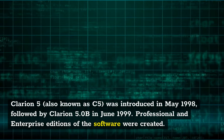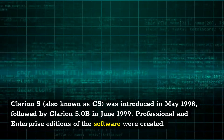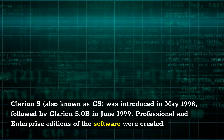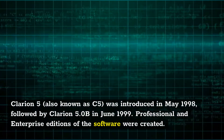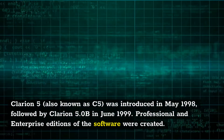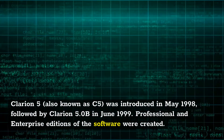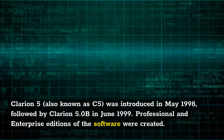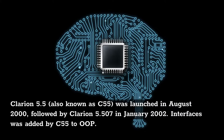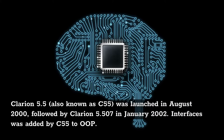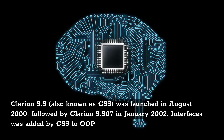Clarion 5, also known as C5, was introduced in May 1998, followed by Clarion 5.0b in June 1999. Professional and enterprise editions of the software were created. Clarion 5.5, also known as C55, was launched in August 2000, followed by Clarion 5.507 in January 2002. Interfaces were added by C55 to OOP.